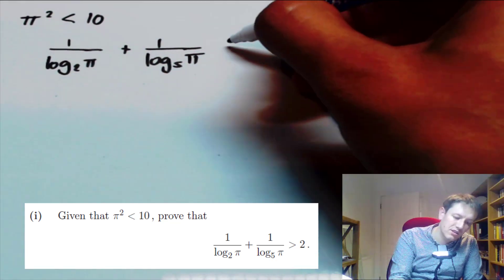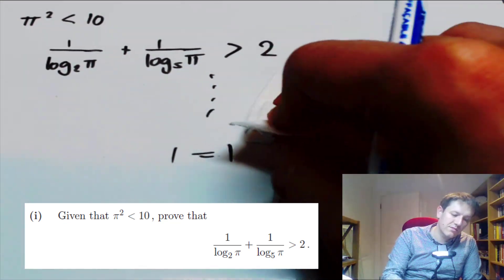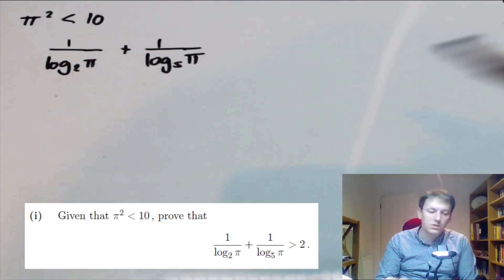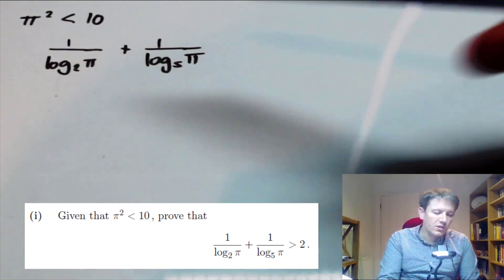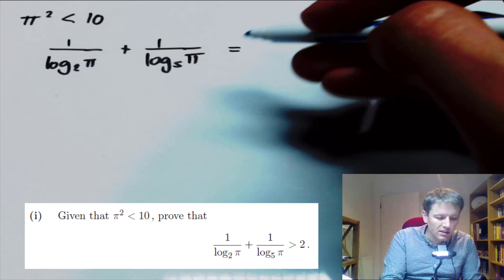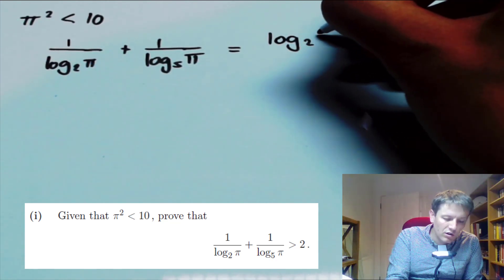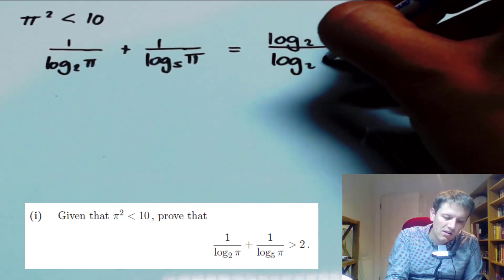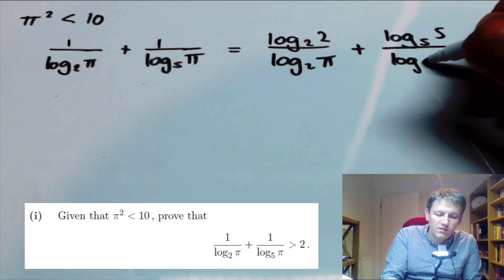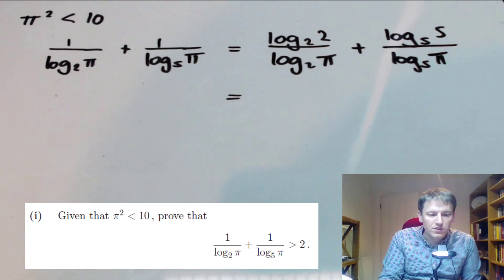So I start with this left-hand side. Just to be clear, if I started with the full inequality and made deductions to get something like 1 equals 1, that sort of proof is not mathematically valid. I have to start with the left-hand side and make a series of arguments to show it is greater than 2. We need to get the change of base formula in somewhere. I can write the first term as log₂(2) divided by log₂(π), and the second as log₅(5) divided by log₅(π).